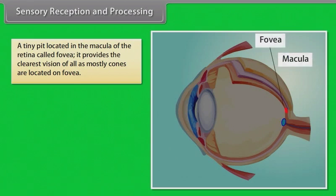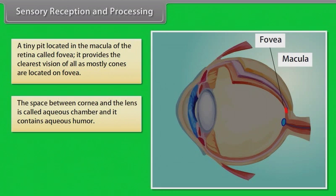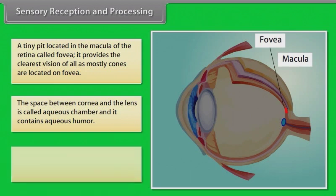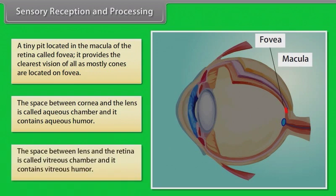The area where the optic nerve forms contains no photoreceptors and is insensitive to light, known as the blind spot. A tiny pit located in the macula of the retina is called the fovea, which provides the clearest vision as mostly cones are located there. The space between the cornea and the lens is called the aqueous chamber, containing aqueous humor, and the space between the lens and the retina is called the vitreous chamber, containing vitreous humor.